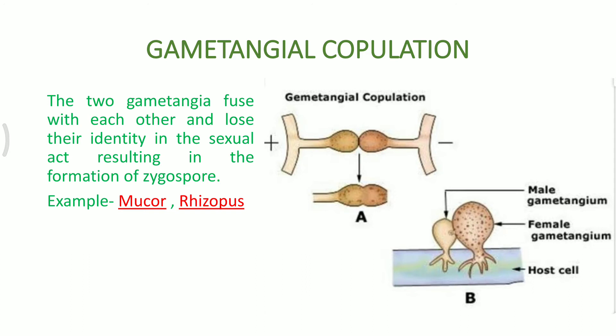Gametangial copulation is the third category of sexual reproduction, where two different strains of fungi fuse together or come into sexual contact with each other to form a zygospore, and that zygospore is diploid, giving rise to the next plant body. Examples are Rhizopus or Mucor. You can see the gametangia — both strains are different, one is a positive strain and the other is a negative strain. Both the male and female gametangia develop on the same host, with a connection formed between them, like two dumbbells coming into close proximity and then fusing their inner membranes.